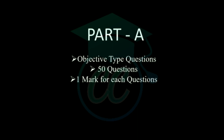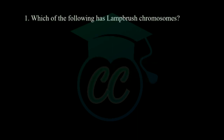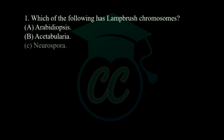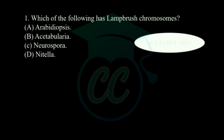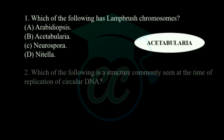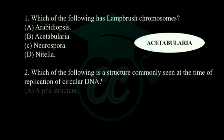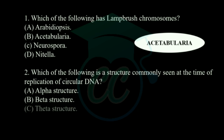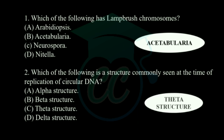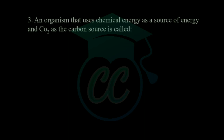First question: which of the following has a lampbrush chromosome? Options: Arabidopsis, Acetabularia, Neurospora, and Michella. The organism which has a lampbrush chromosome is Acetabularia. Next question: which of the following is a structure commonly seen at the time of replication of circular DNA? Options: alpha structure, beta structure, theta structure, and delta structure. The structure seen at the time of replication of circular DNA is the theta structure.